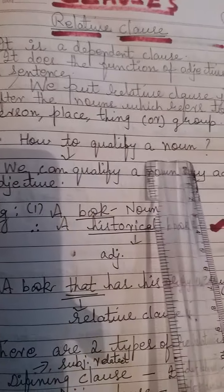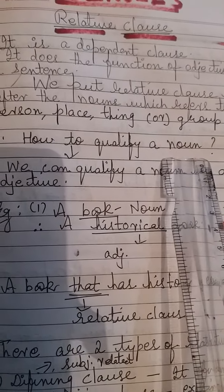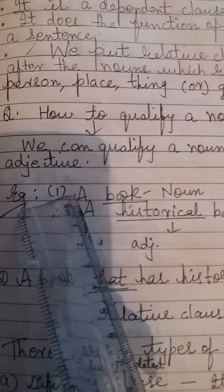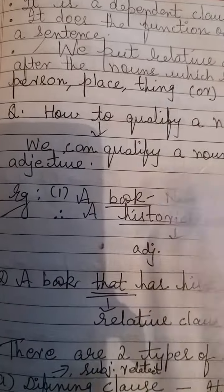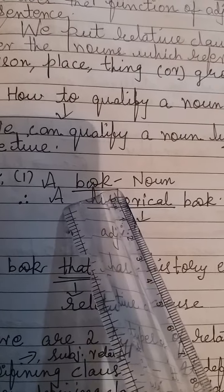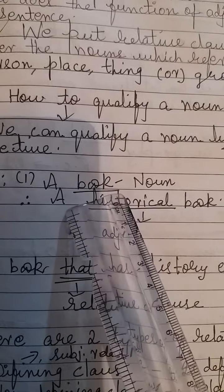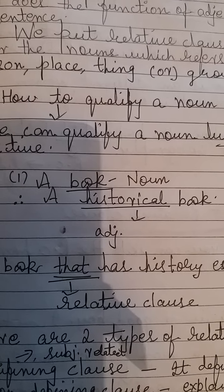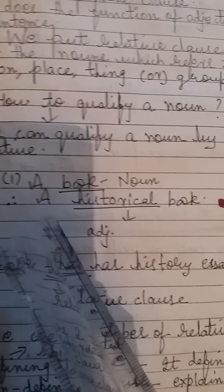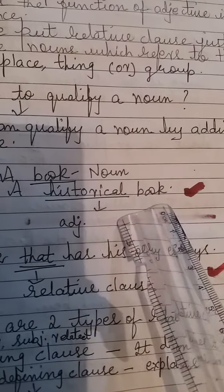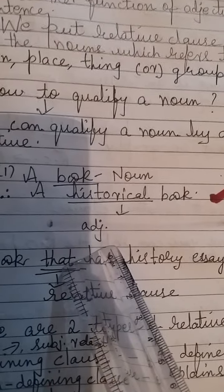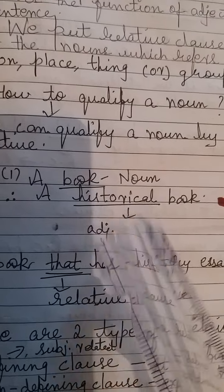How do we qualify a noun? How can we define a noun? We can qualify a noun only by adding an adjective. Simple example: we can transform a sentence by adding 'historical' to get 'a historical book.' So if we want to qualify a noun, we need to add an adjective.